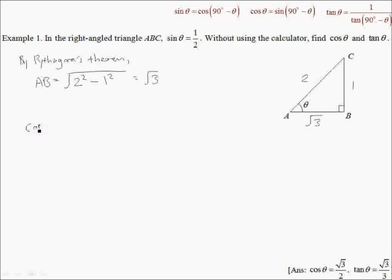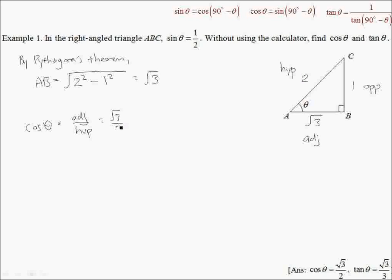cosθ is defined as adjacent over hypotenuse. So let us identify. With respect to θ, this would be my adjacent, this would be the opposite, and this would be the hypotenuse. So cosθ is simply root 3 over 2.